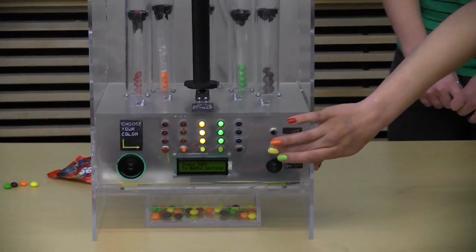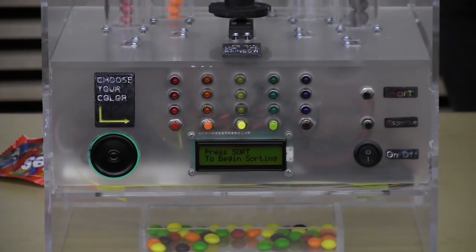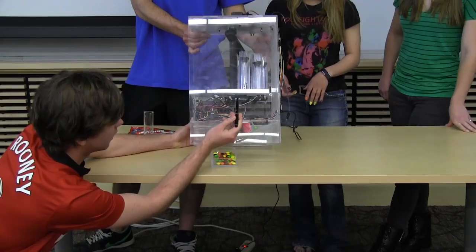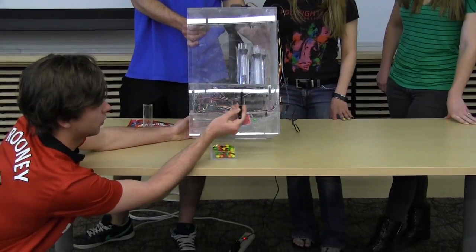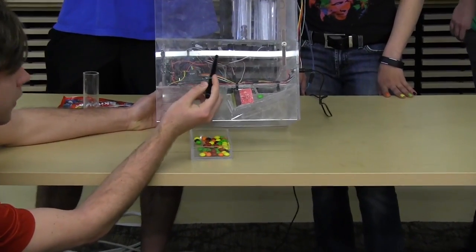And then you just press this dispense button, and these little servos pull back and dispense the Skittles. We've got a little 3D printed trap door attached to just a steel rod to the arm on the servo.